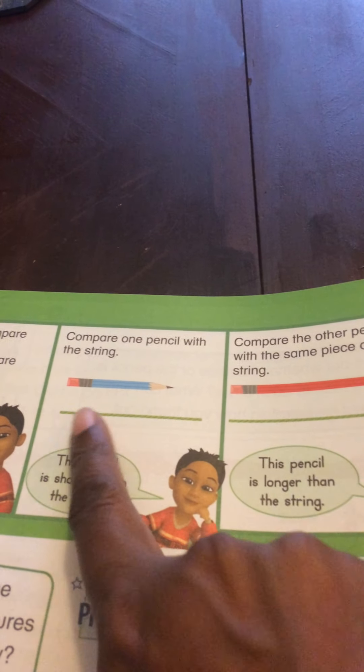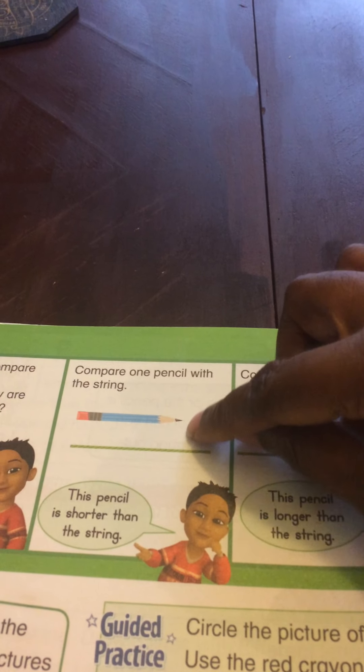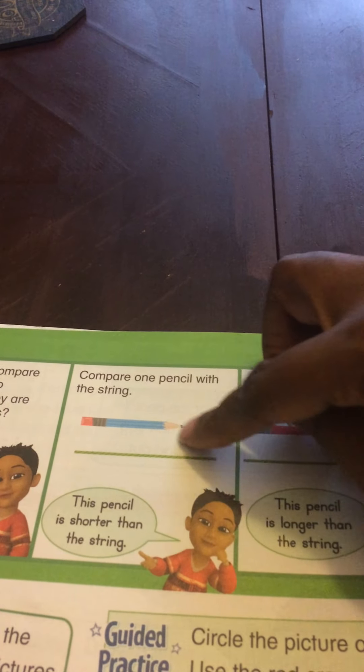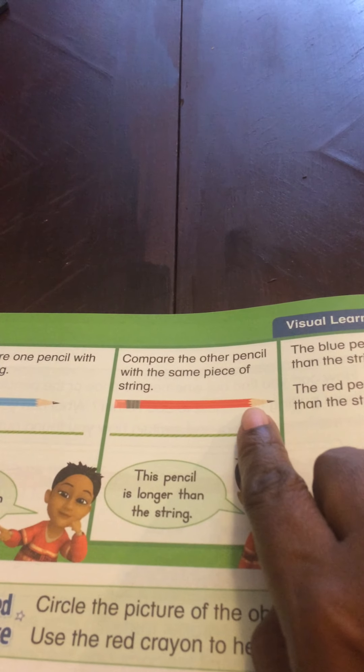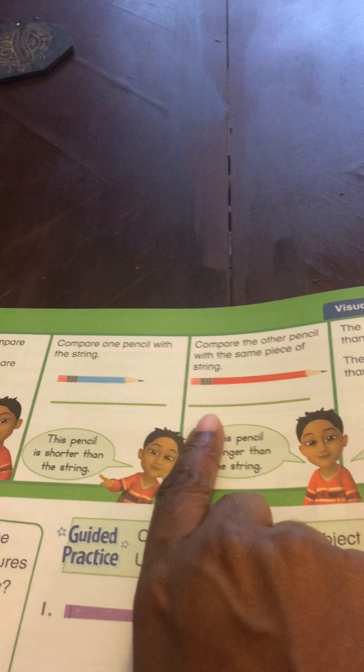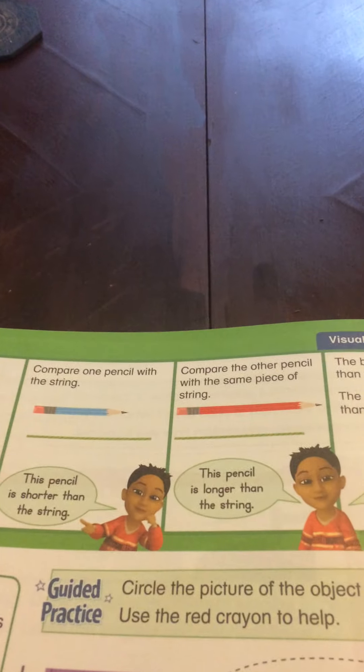This pencil is shorter than the string. You only have a little bit left here, but it's clearly shorter. When we look at this pencil, it's longer than the string. Since we use the same string for both of them, we know the blue pencil is shorter than the string and the red pencil is longer than the string. Therefore, the red pencil is longer than the blue pencil.